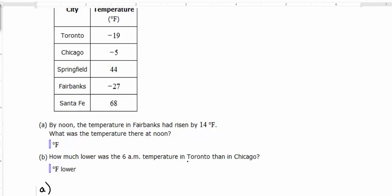So the key thing is to notice that risen by 14 degrees implies addition. So we take our original Fairbanks temperature, so it's minus, we're adding 14. So we started at negative 27 degrees, and we're adding 14 degrees.